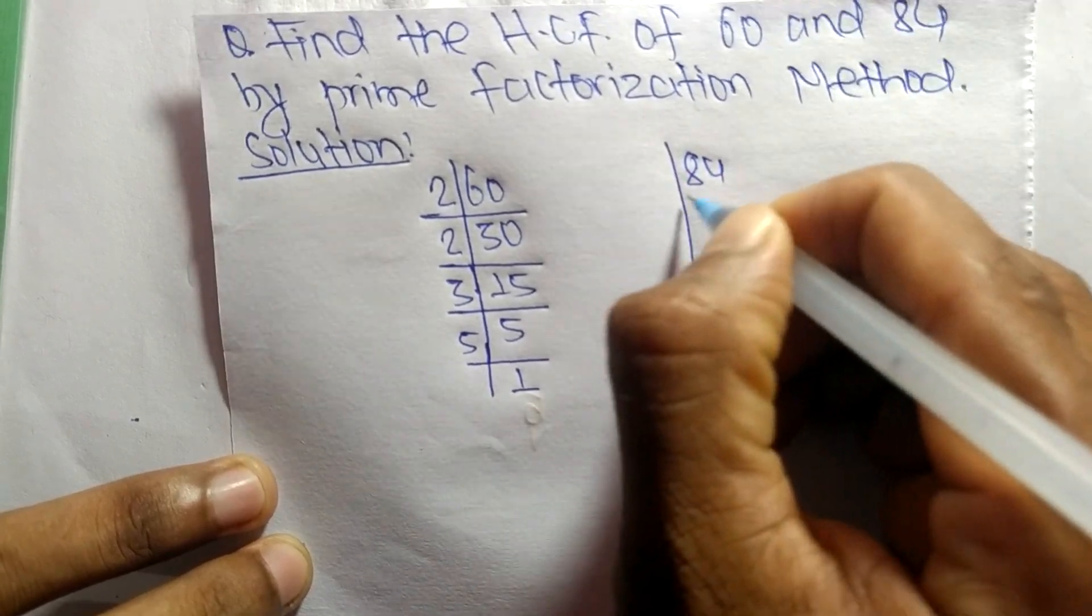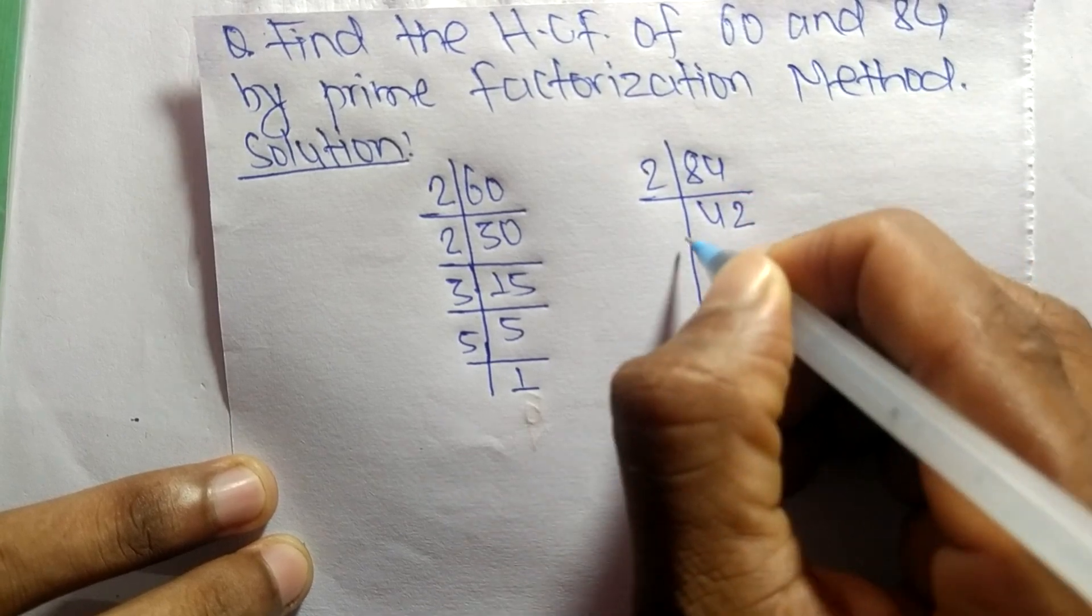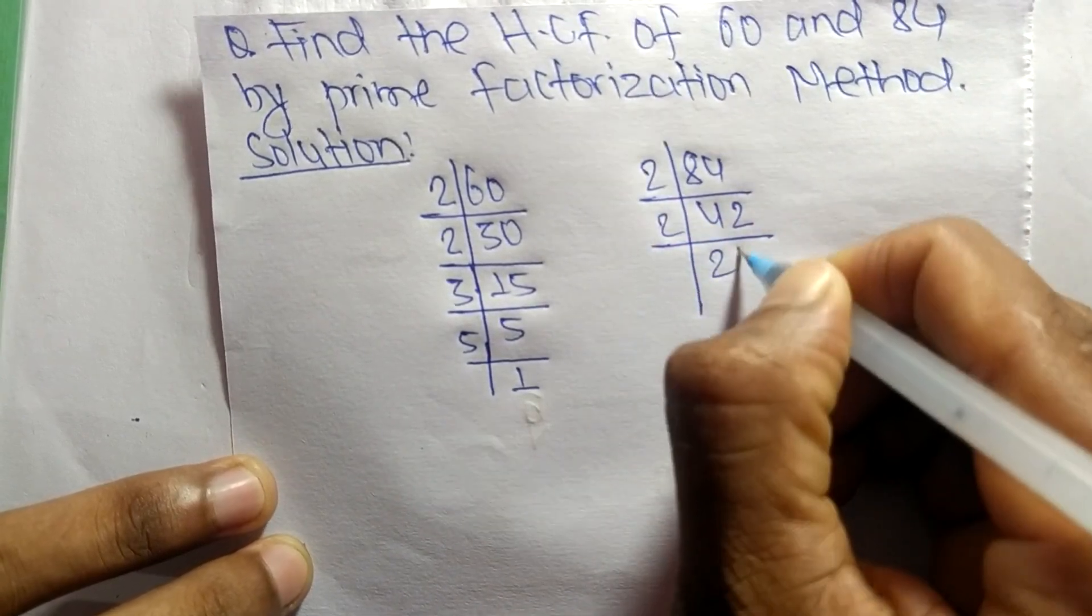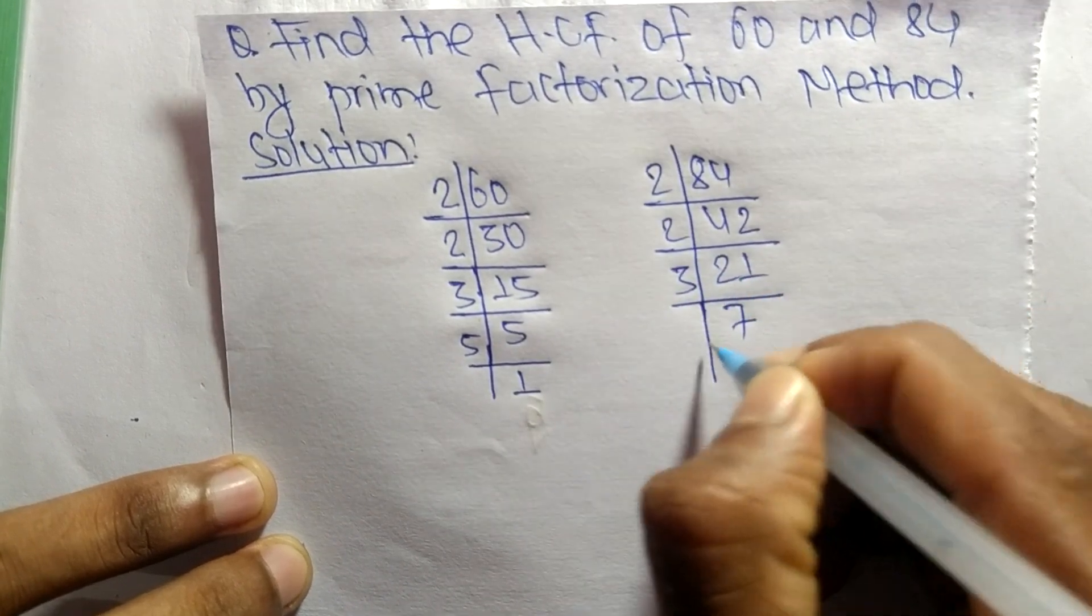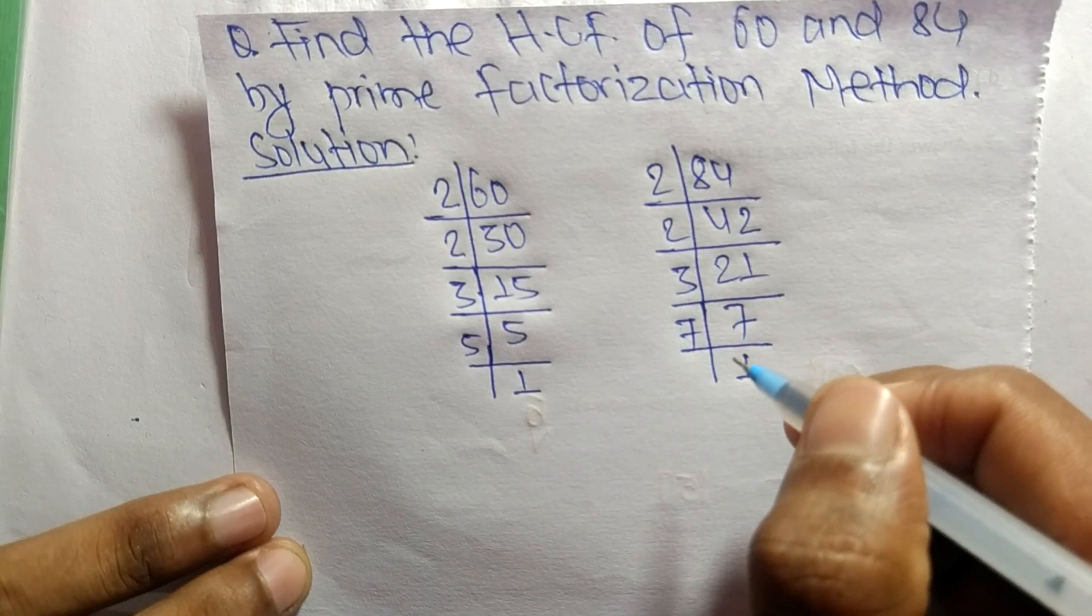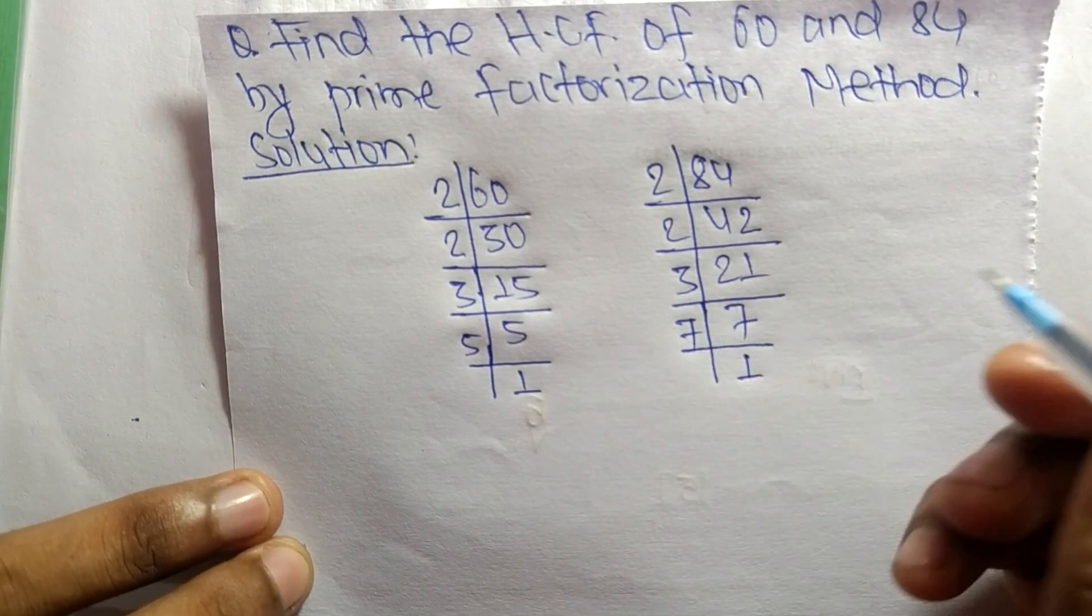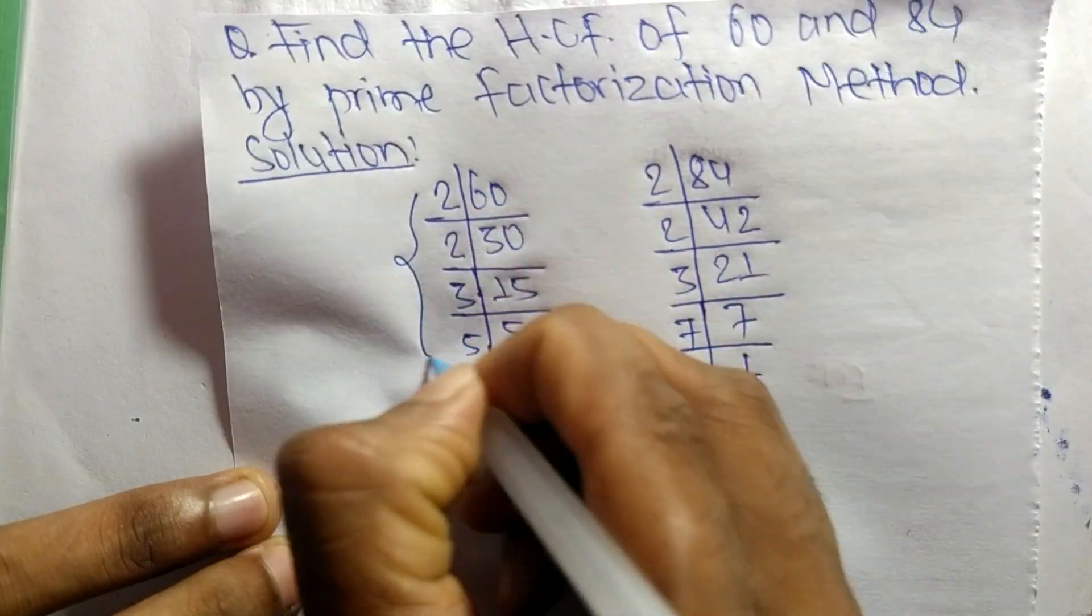The prime factors of 84 are: 2 times 42 equals 84, 2 times 21 equals 42, 3 times 7 equals 21, and 7 times 1 equals 7. From these prime factors we can write 60 equals,